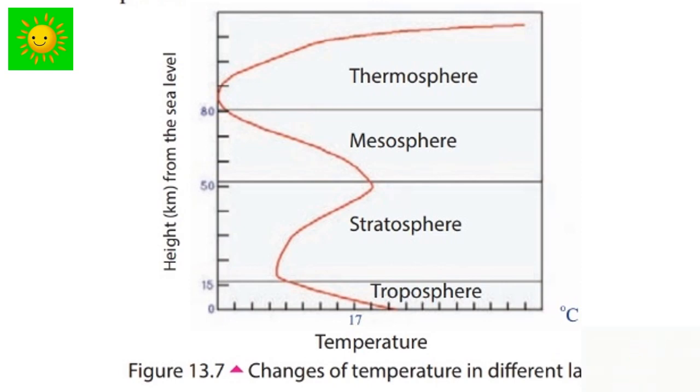The land and the sea get heated from the sun's heat, so the temperature near to the land is high. The temperature of the troposphere gradually decreases away from the land. Temperature increases in the stratosphere when you go up. The reason is the presence of the ozone layer which absorbs the ultraviolet rays of the sun. Then stratosphere gets heated and temperature increases.